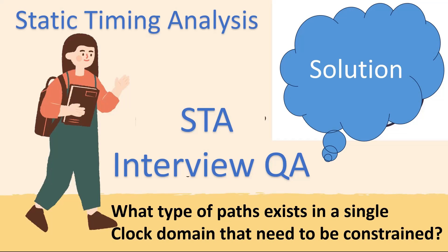The question is very simple: what type of paths exist in a single clock domain design that need to be constrained? Let us assume that you have a complex design but it uses only a single clock in it.